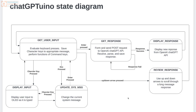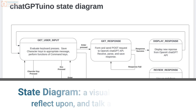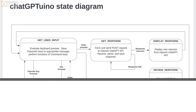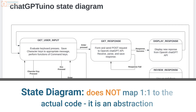So let's say this again about state diagrams. A state diagram is a visual way to help developers describe the flow of a program, discuss it with others, and think about the system as a whole. Now, just as important is what a state diagram is not. It's really important to note that a state diagram does not map one-to-one to the actual code or any specific functions in the code.